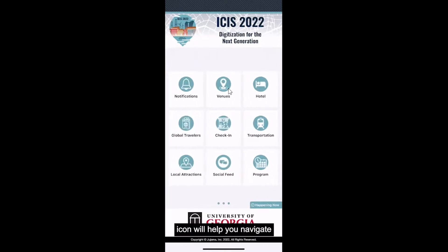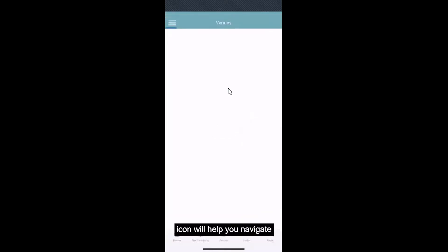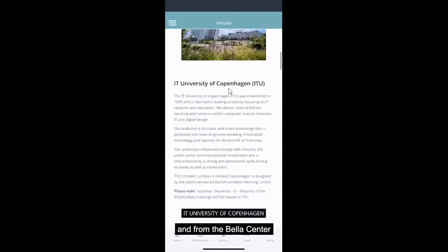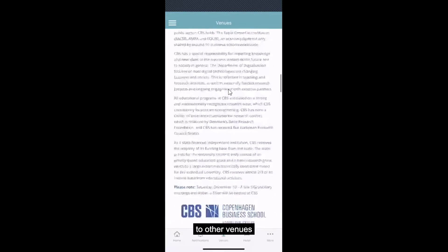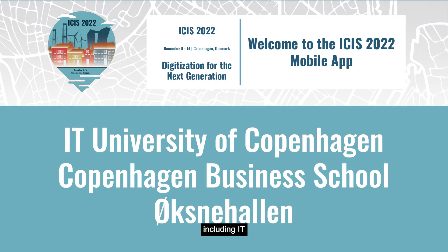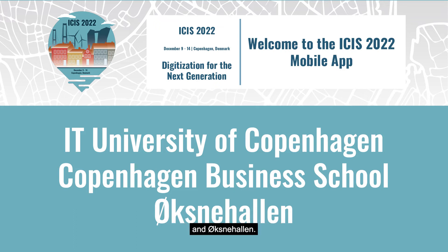The Venues icon will help you navigate how to travel to and from the Bella Center to other venues at the conference, including IT University of Copenhagen, Copenhagen Business School, and Oxenhavn.